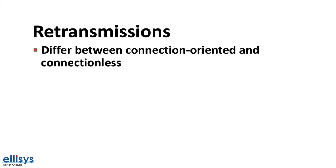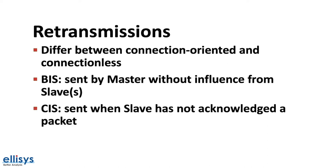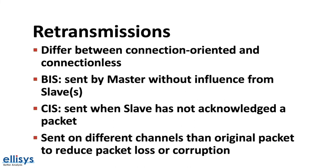Isochronous channels also support data retransmissions. However, they differ between connection-oriented and connectionless communication. In the case of broadcast isochronous streams, retransmissions are sent by the master without influence from the slave or slaves. In the case of connected isochronous streams, retransmissions are sent when a slave has not acknowledged a packet. Also note that retransmissions are sent on different channels than the original packet in order to reduce the risk of packet loss or corruption.